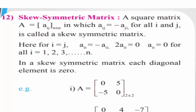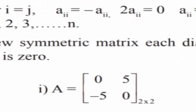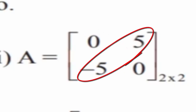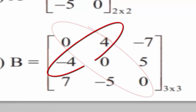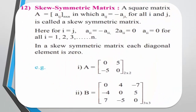Skew Symmetric Matrix: A square matrix A with elements Aij of order m by n in which Aij equals minus Aji for all i and j, and all diagonal elements Aii equal 0, is called a skew symmetric matrix. For example, matrix A of order 2 by 2 has diagonal elements 0 and A12 equals minus A21. Matrix B of order 3 by 3 has all diagonal elements 0, A12 equals minus A21, A13 equals minus A31, and A23 equals minus A32. Both A and B are examples of skew symmetric matrices.